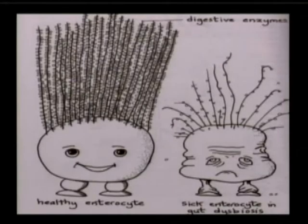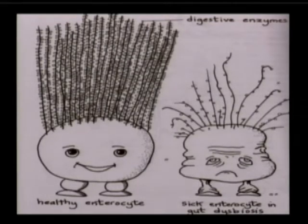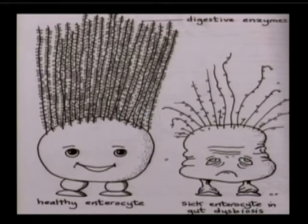This is a great slide from Dr. Natasha Campbell McBride's book, which I highly recommend, 'Gut and Psychology.' Here's her cartoon expression of a great cell with a little hair and the little enzymes, and then a sick cell that she would explain in autism. I thought it was a great visual.